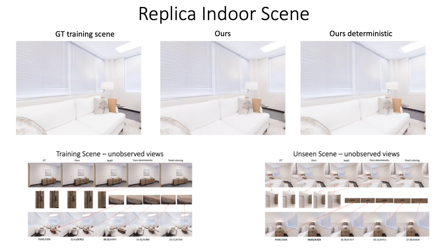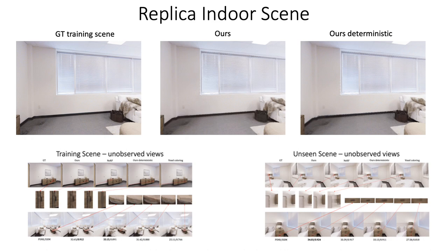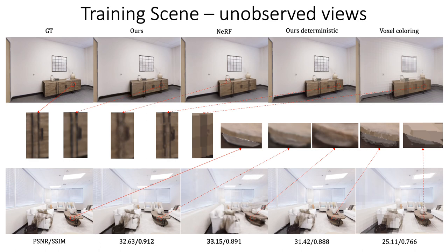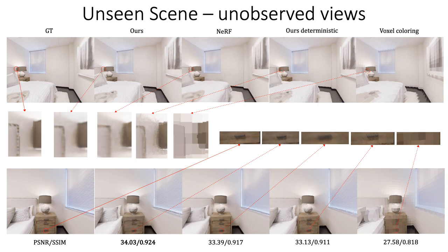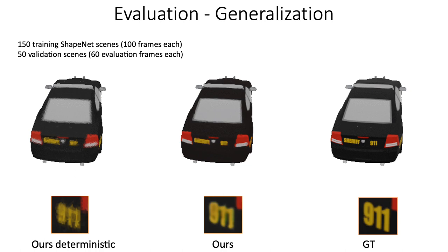Furthermore, our method generalizes unlike recent learned neural approaches. Our pipeline can be trained on one scene and used at inference time on another scene, as we demonstrate here for the replica room. While the neural baseline is trained for two days, our approach yields sharper results in a few seconds without any scene-dependent training. This makes our method over a thousand times faster on unseen scenes. We further demonstrate that our method generalizes well on a bigger ShapeNet dataset and successfully improves discretization artifacts. Thank you.